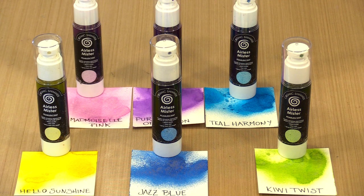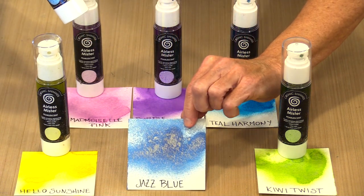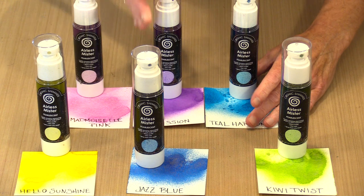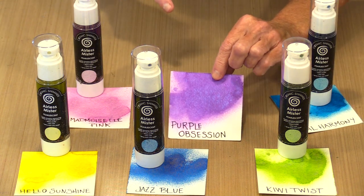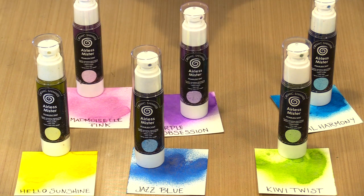In this group, the mica color mostly matches the spray color, but not always. For example, when you look at Jazz Blue, you can see that the mica in it is actually gold. In the Purple Obsession, the mica color tends to be more of a blue or bluey purple color. So that's going to vary according to the colors.